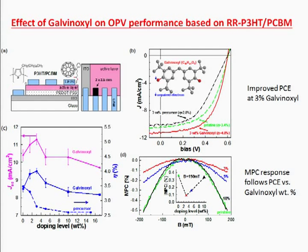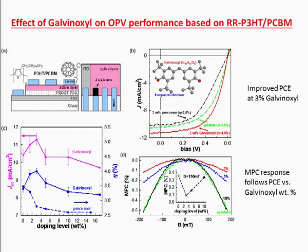We used the spin one-half radical galvinoxyl — you can see the molecular structure here — mixed together with P3HT:PCBM. To our surprise, the photocurrent increases by about 10%; the voltage remains the same, so we had about a 10% increase in power conversion efficiency. We did magnetic field effect measurements and saw that the magneto-photocurrent goes together with the increase in current, so it's not an artifact — it has physical meaning.